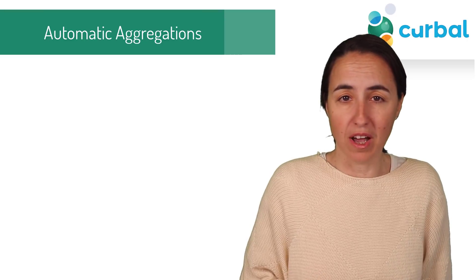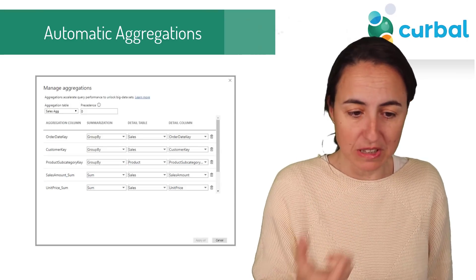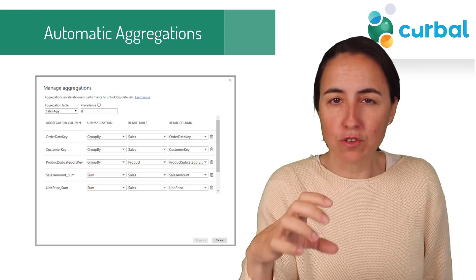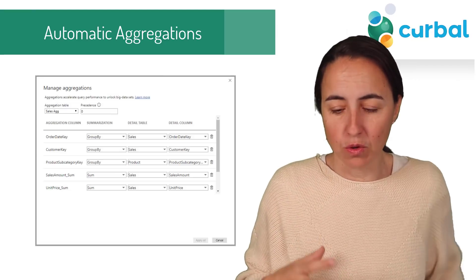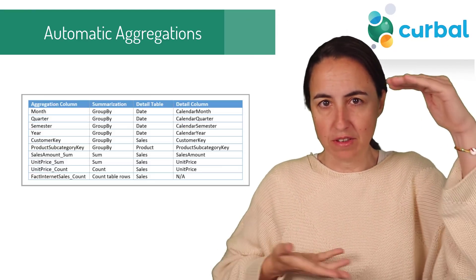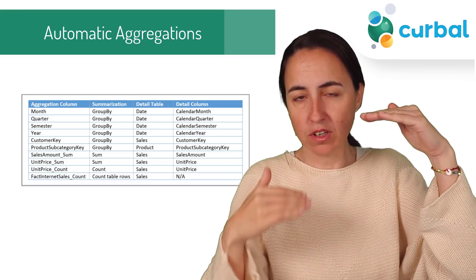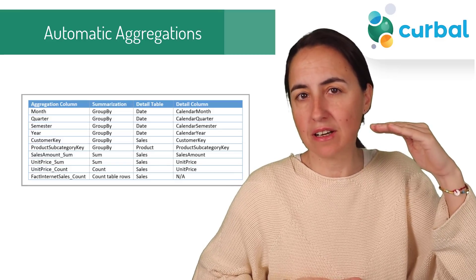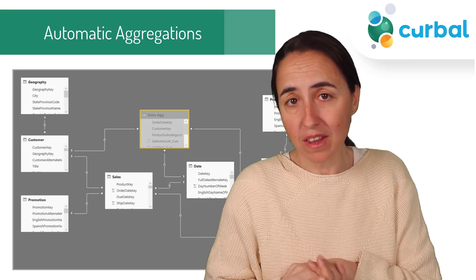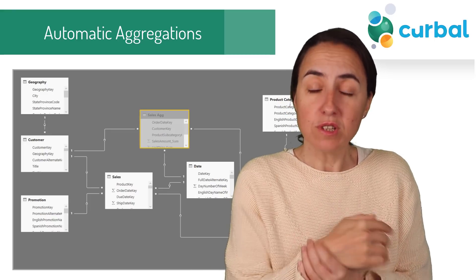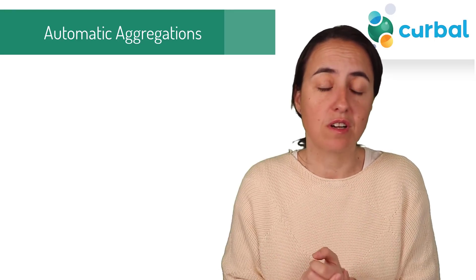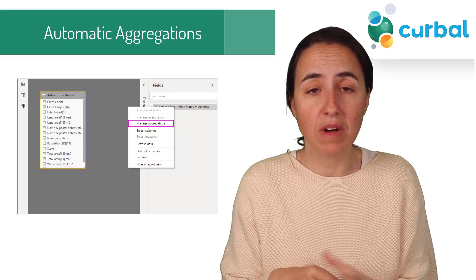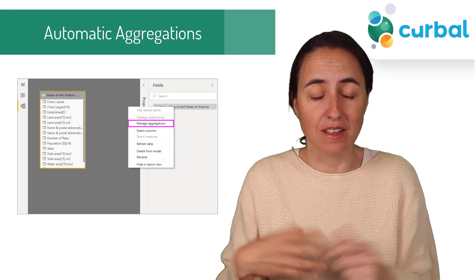The first thing released is automatic aggregations in Power BI. If you don't know what aggregation is, it's basically when you optimize tables for frequently asked questions. For example, if you have data at the day level but questions are mostly asked at the month level, it automatically creates an aggregated table by month. The responses are faster. You could do that manually before, but now it's done automatically — great news.